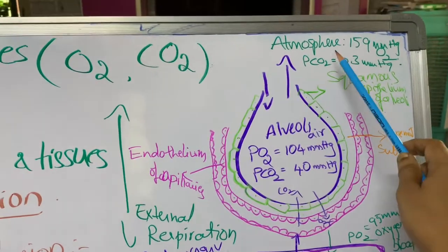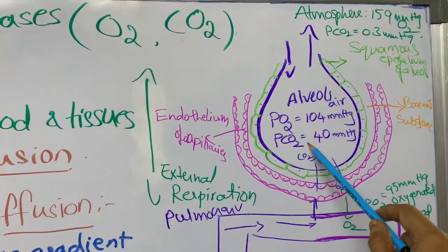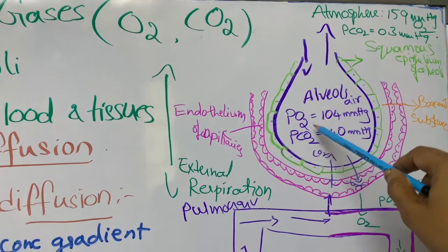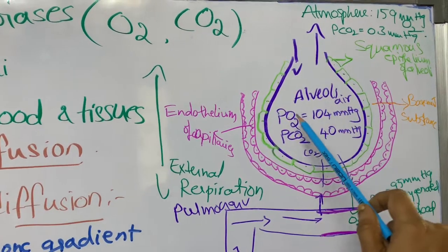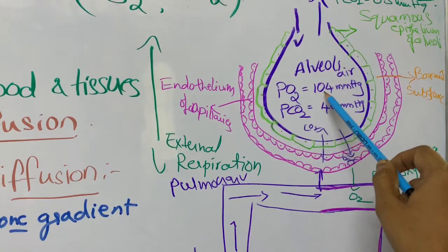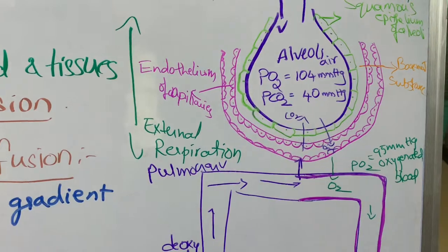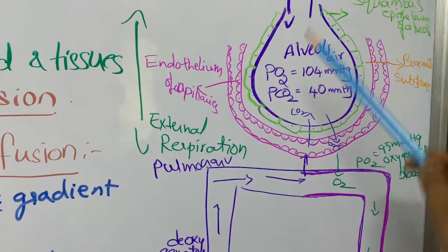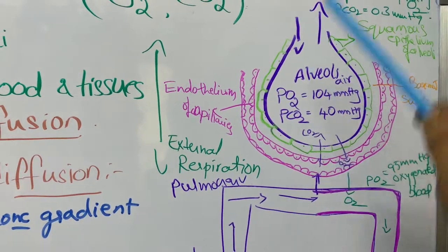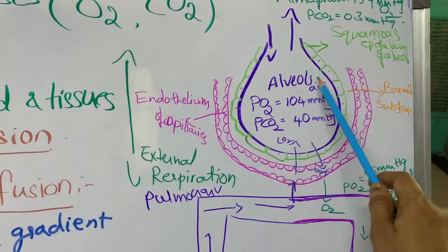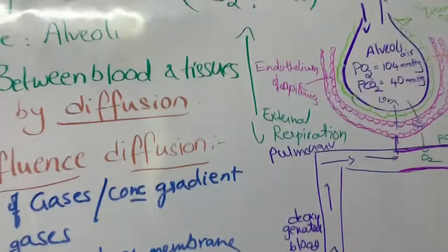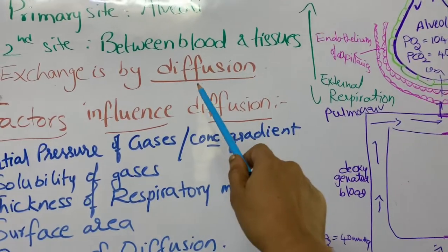When air enters into the alveolar cavity, the partial pressure of oxygen in the alveolar cavity is 104 mm Hg and the partial pressure of carbon dioxide is 40 mm Hg. There is a vast difference between atmospheric oxygen (159 mm Hg) and alveolar oxygen (104 mm Hg). Since gases move from higher to lower partial pressure, this process is called diffusion.